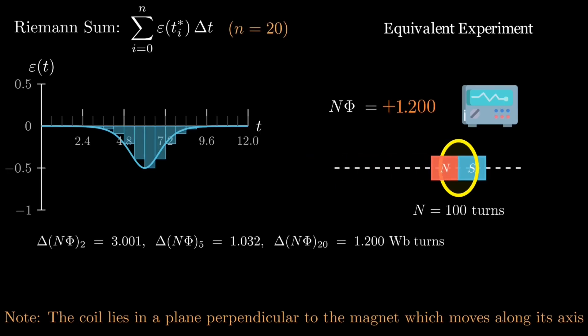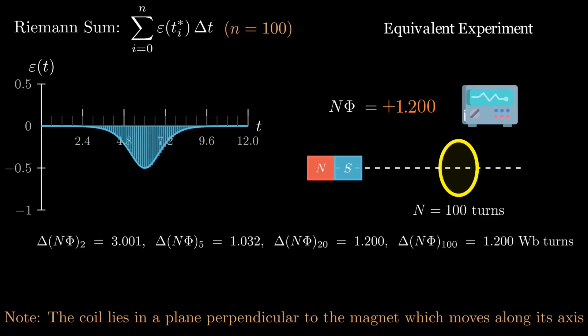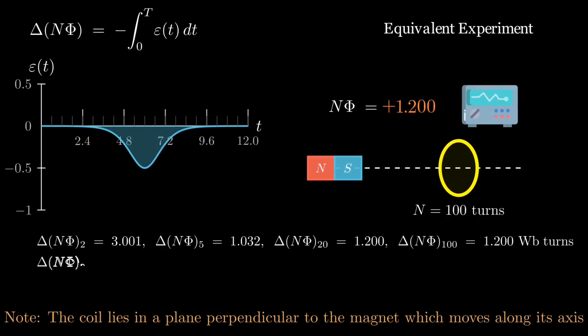With two coarse slices, the estimate is rough. With 5 or 20 or then 100, the running total follows the waveform more faithfully and converges to the actual change. So, this matches Faraday's law, where total flux change comes from adding up all the local voltage spikes.